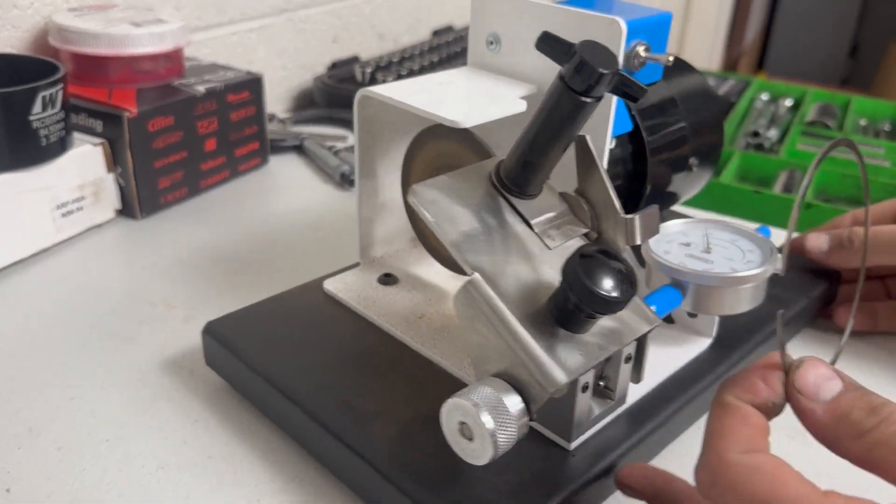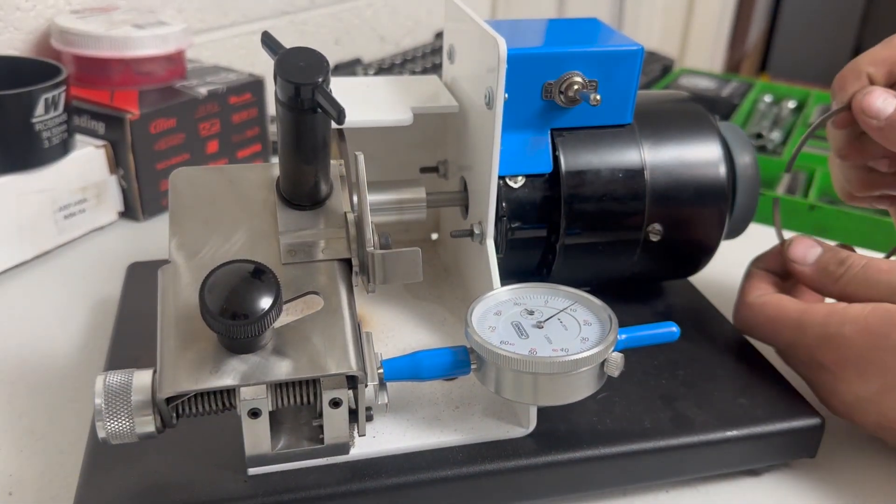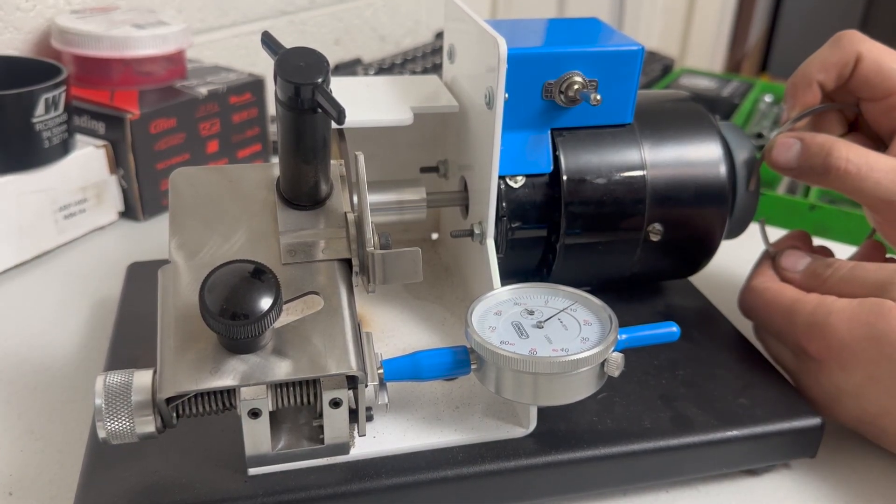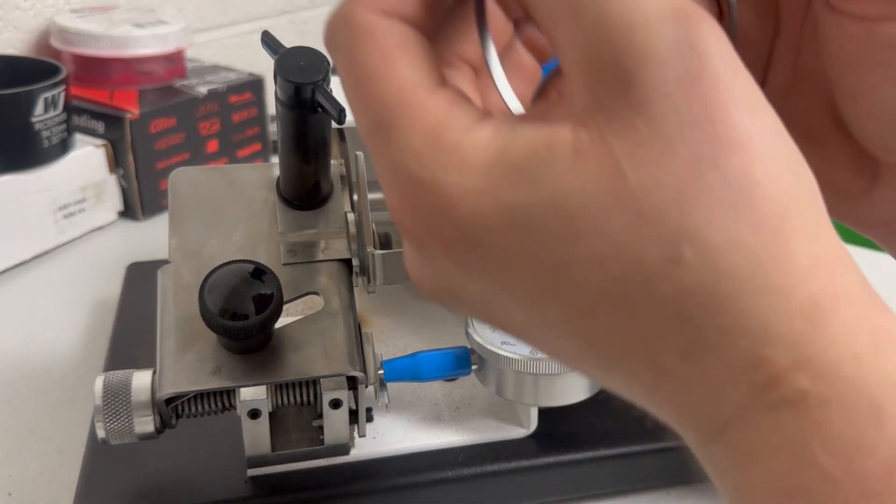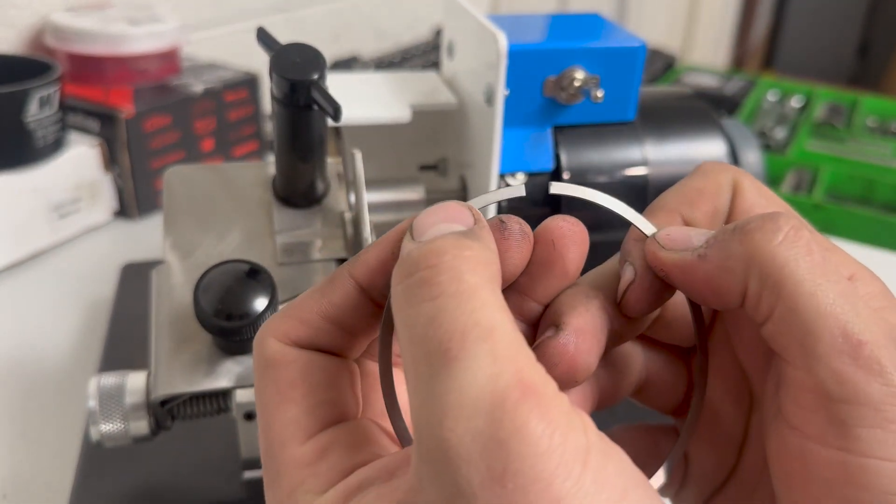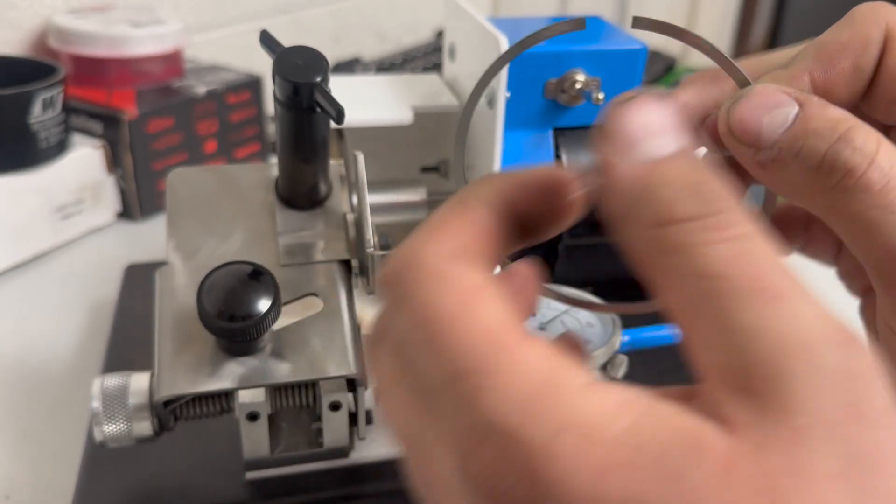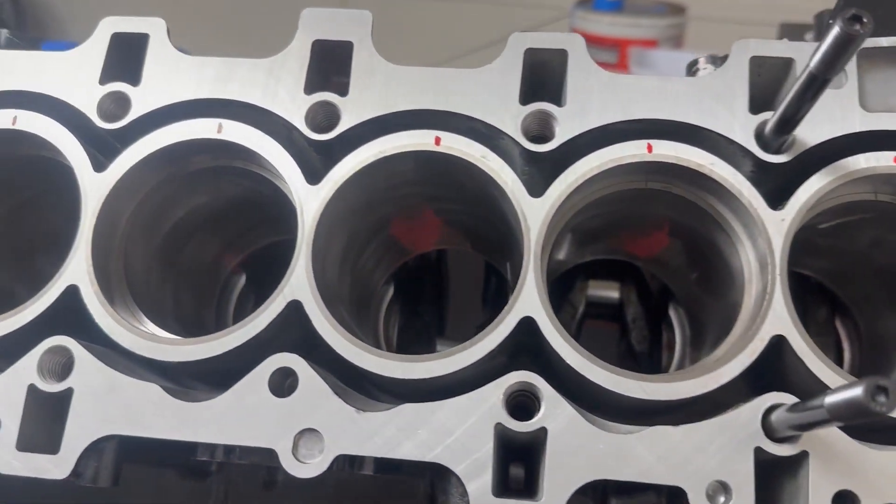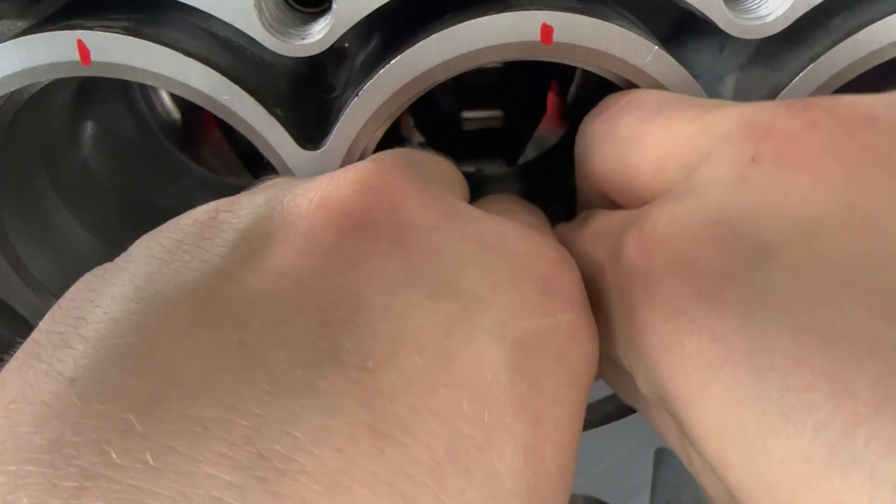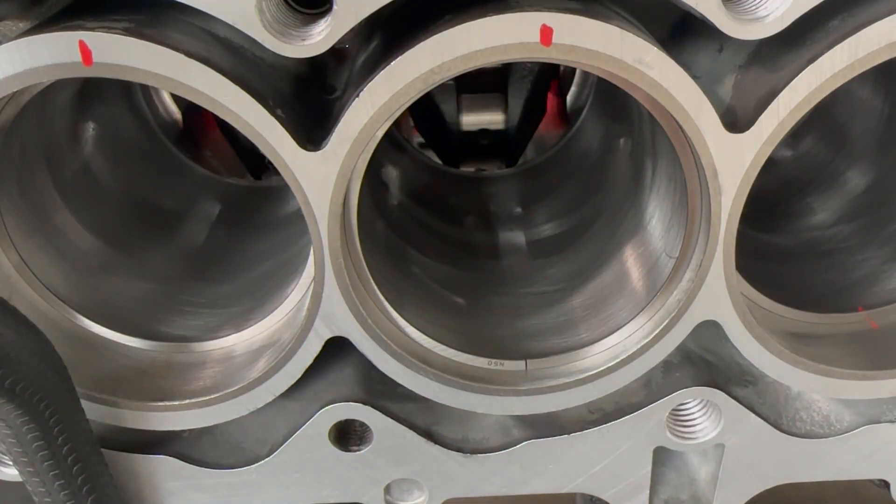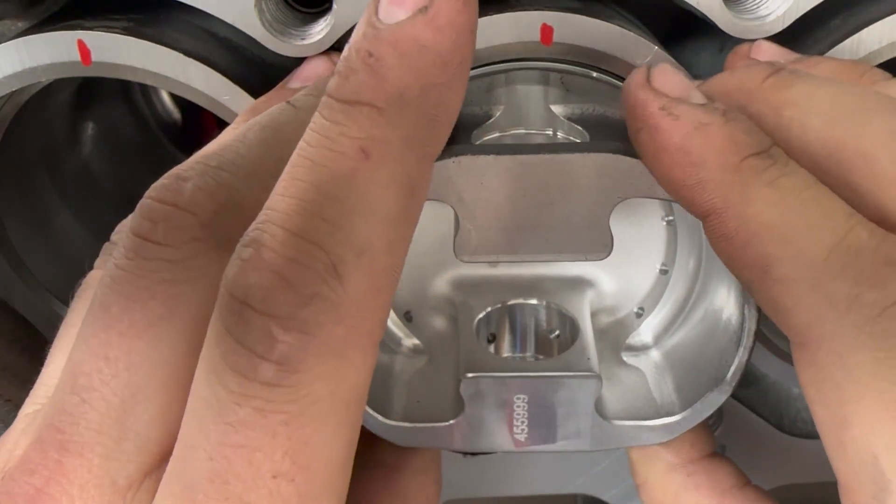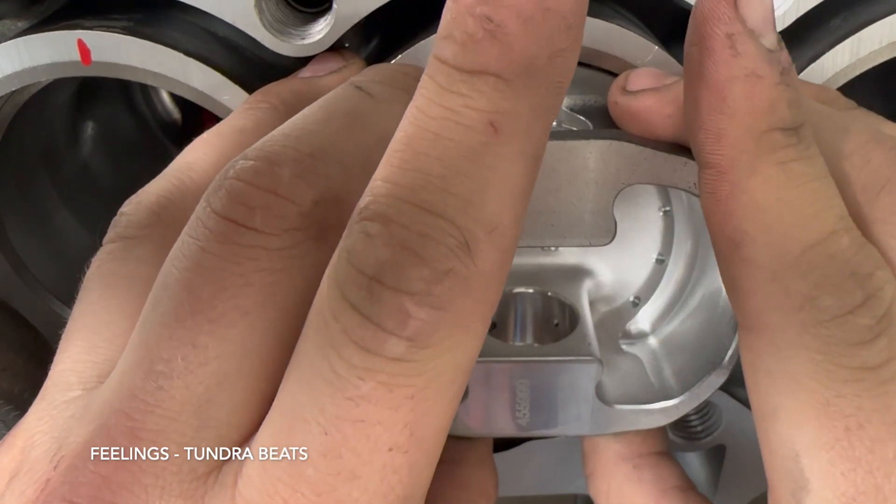We're gonna run it on the back side of this thing and clean it up. So yeah there's the grind nice and straight. Now we're going to put it back into the block, pushing this down with a piston, get it nice and straight.